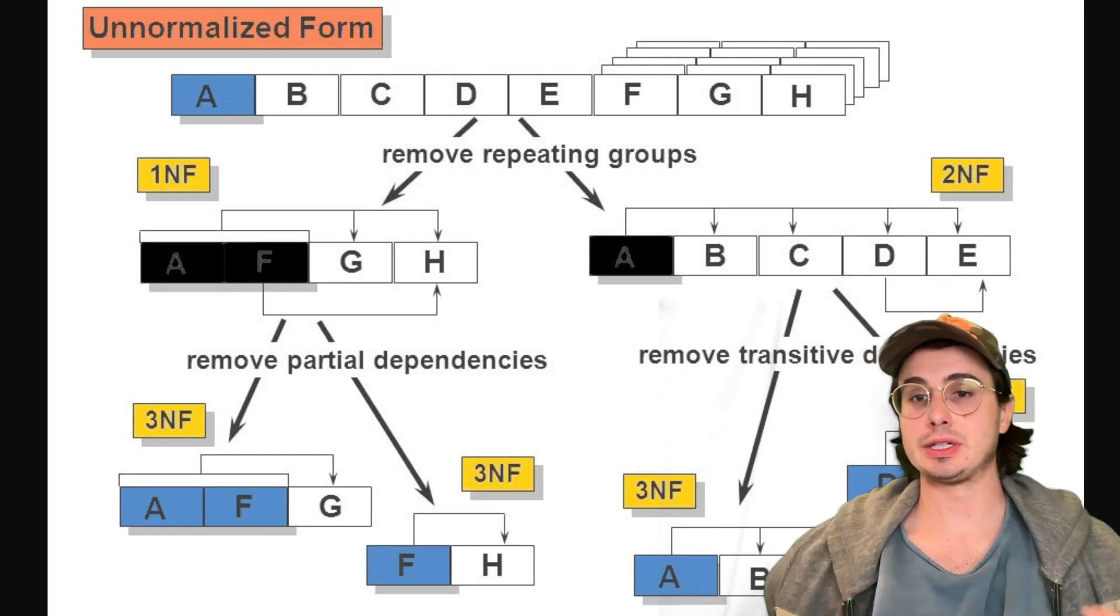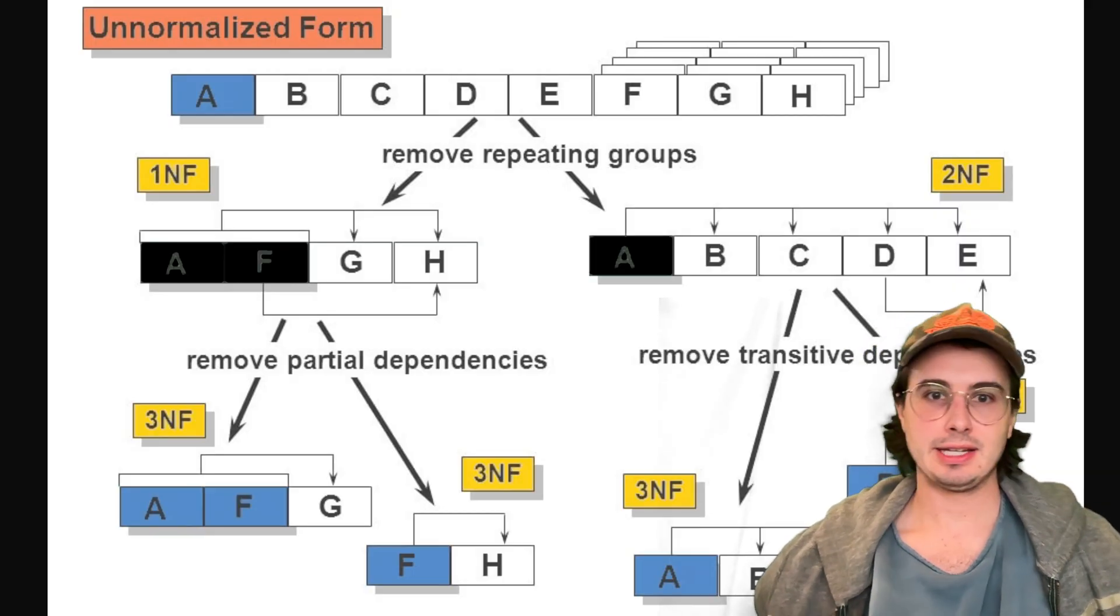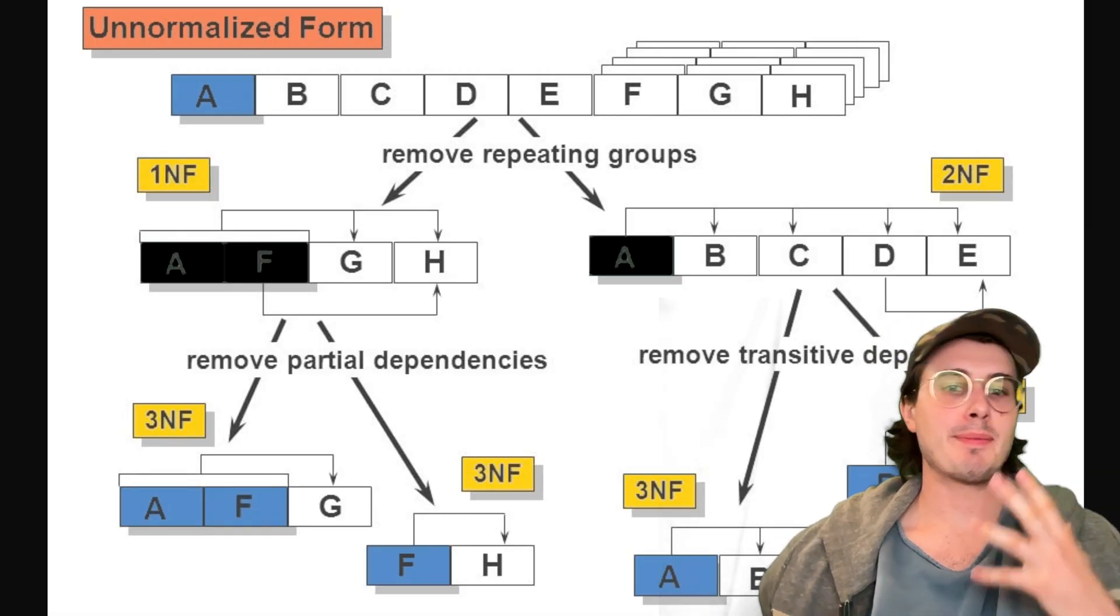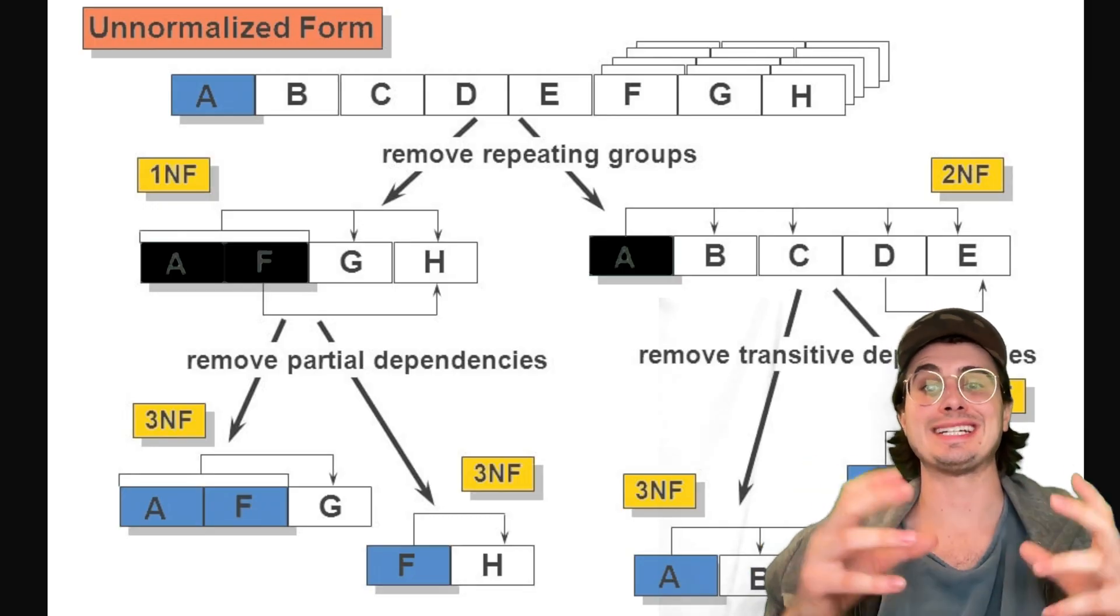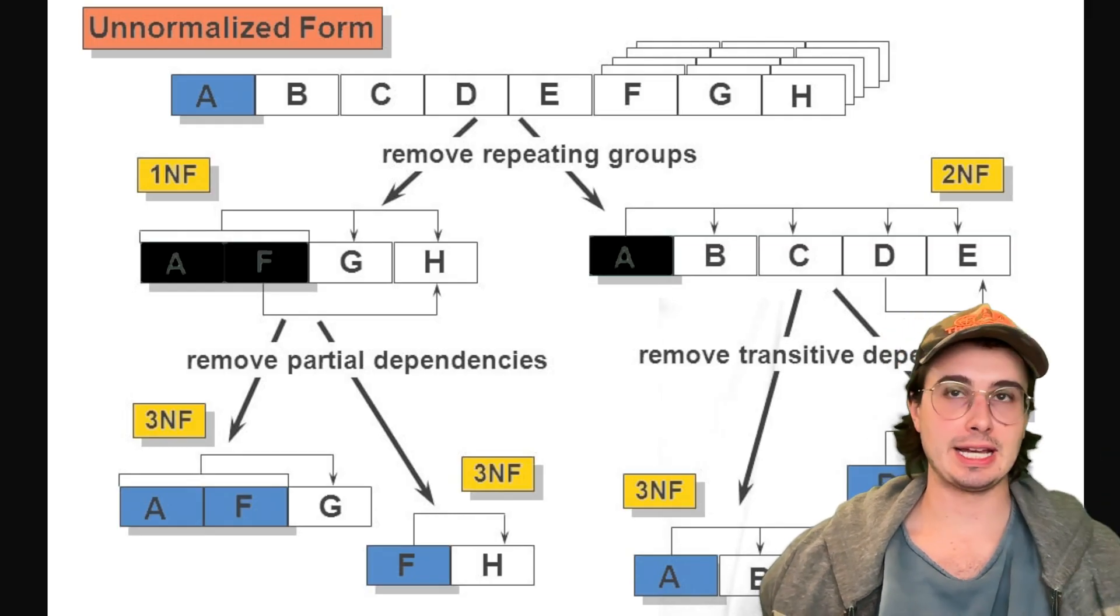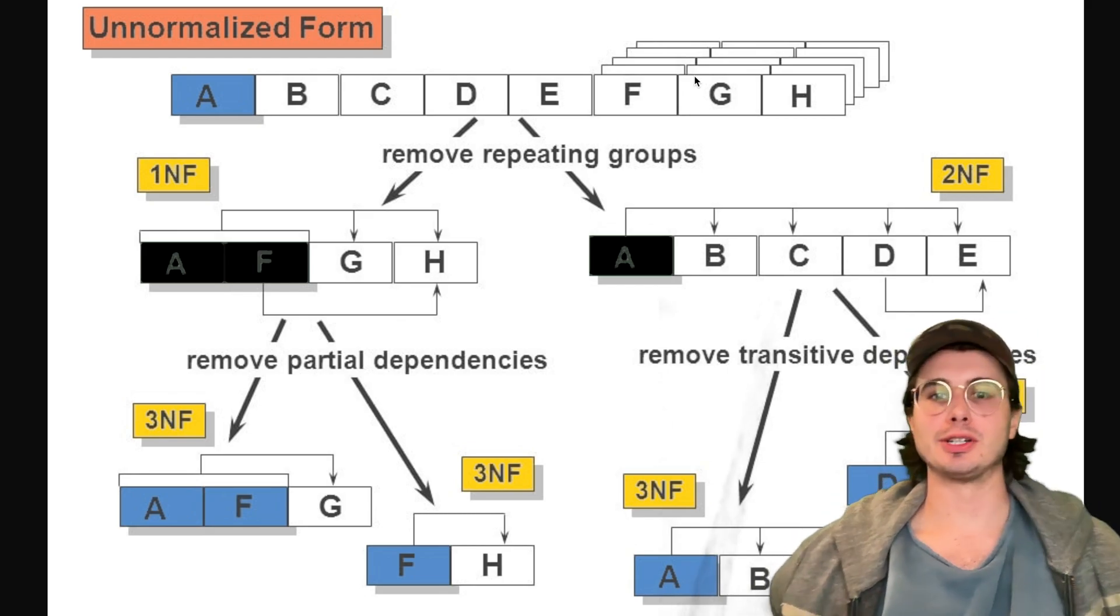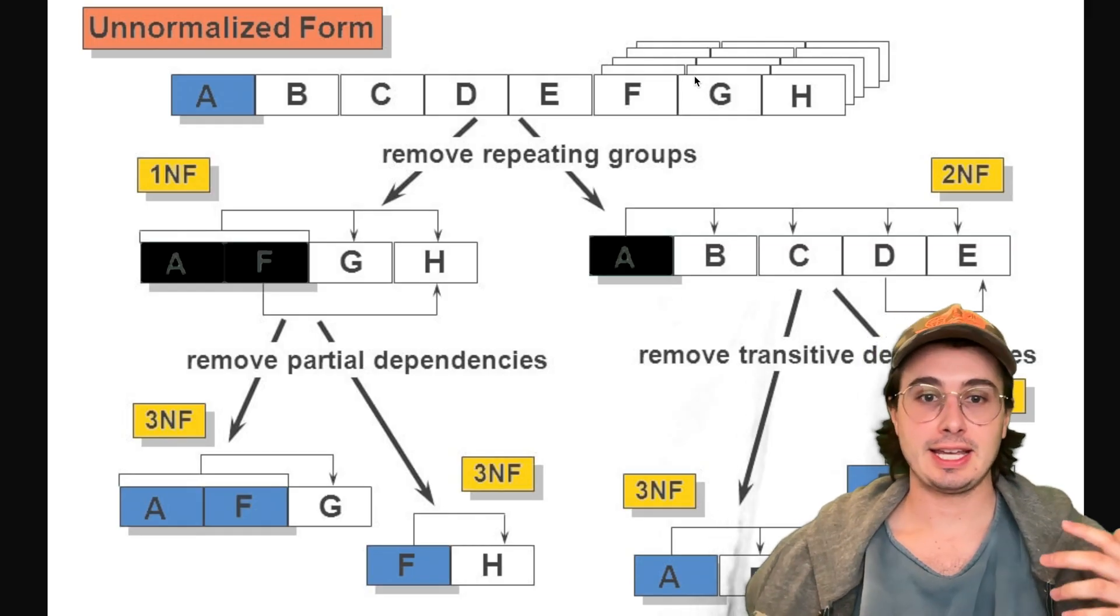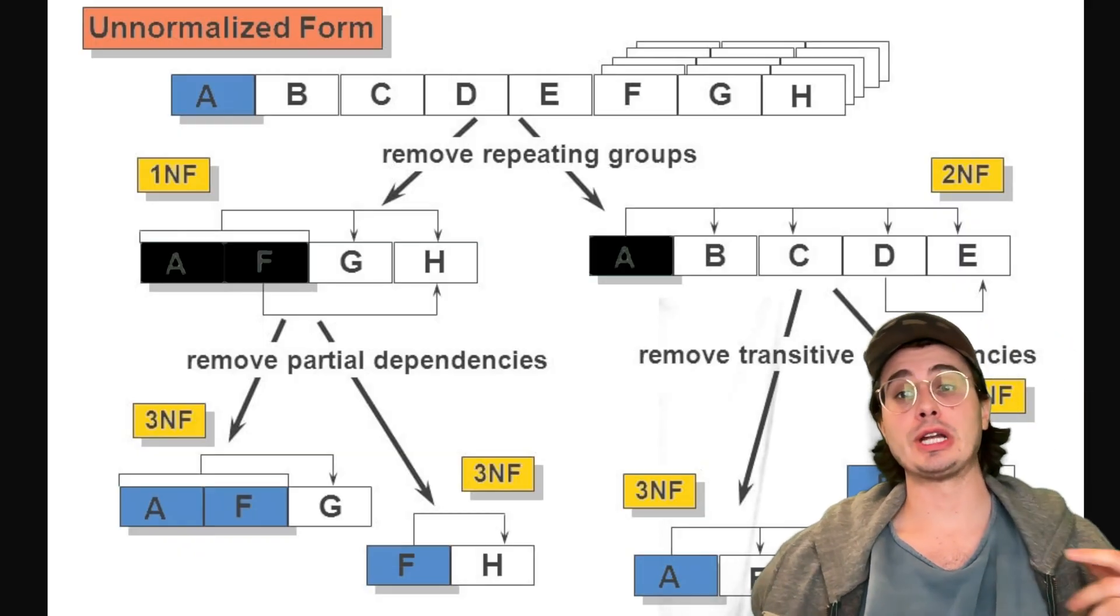Another very common topic is data normalization - what is normalization and when would you denormalize? For 1NF, eliminate repeating groups. For 2NF, remove partial dependencies. For 3NF, remove transitive dependencies. And BCNF ensures every determinant is also a candidate key.